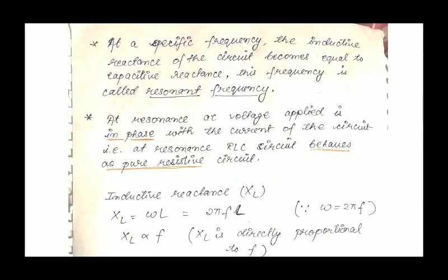Resonance occurs at a specific frequency when the inductive reactance equals the capacitive reactance, and this frequency is called the resonant frequency. At resonance, the applied voltage is in phase with the current, meaning the series RLC circuit behaves as a pure resistive circuit. Now let us further analyze it.